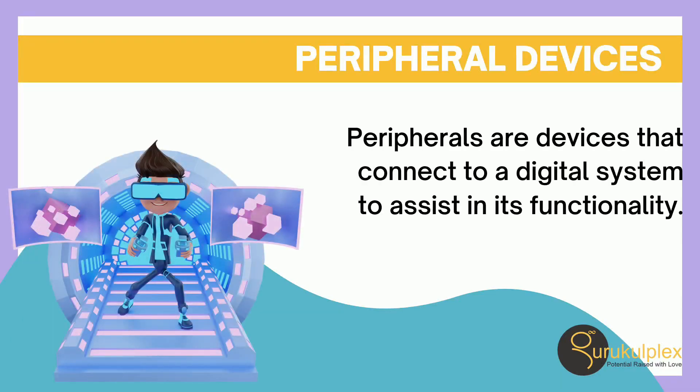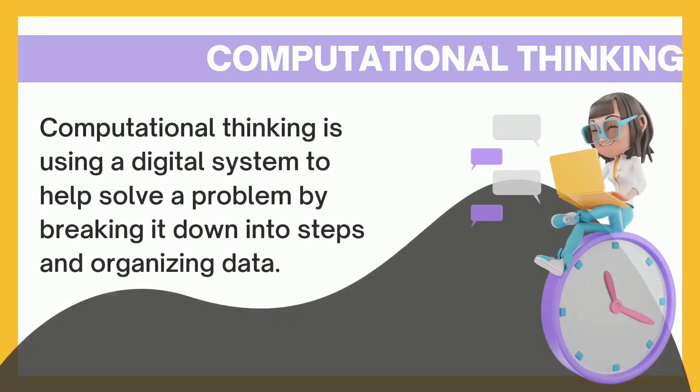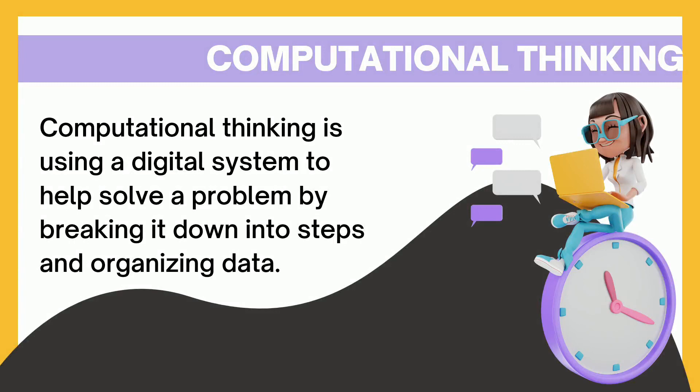Peripherals are devices that connect to a digital system to assist in its functionality. Computational thinking is using a digital system to help solve the problem by breaking it down into steps and organizing data.